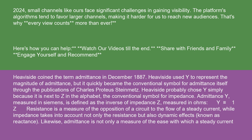Admittance Y, measured in Siemens, is defined as the inverse of impedance Z, measured in ohms. Y = 1/Z. Resistance is a measure of the opposition of a circuit to the flow of a steady current, while impedance takes into account not only the resistance but also dynamic effects, known as reactance.